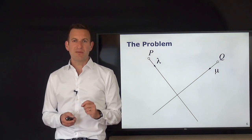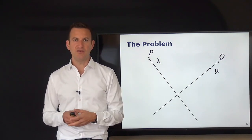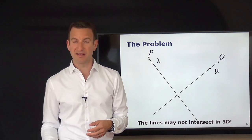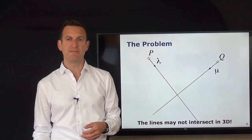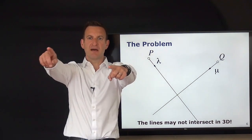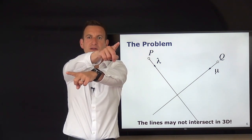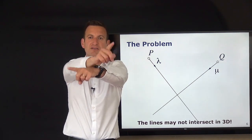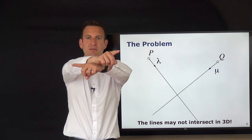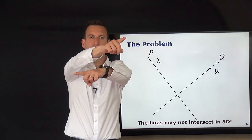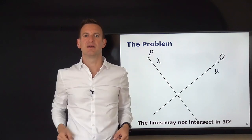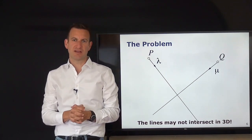The problem is that in 2D that would be easy, but in 3D the lines may not intersect. If one arm is ray number one and the second arm is ray number two, they could go like this with no intersection between those rays. The intersecting point would be somewhere in the middle, but one ray points in this direction and the other ray points in a different direction.